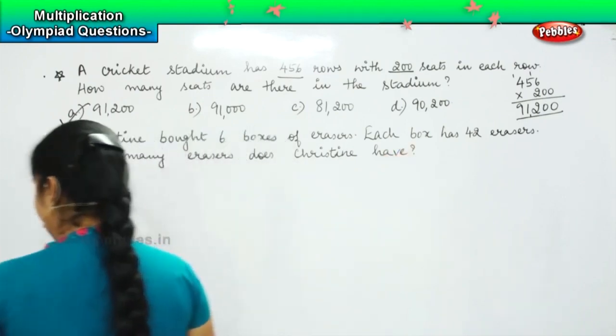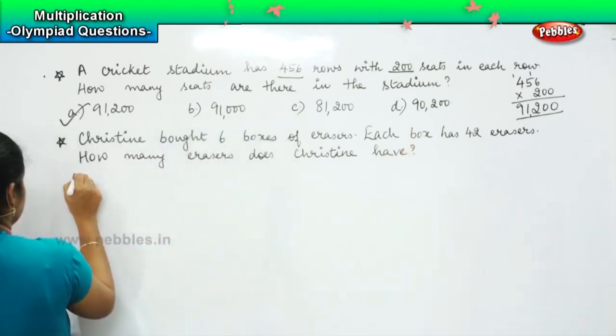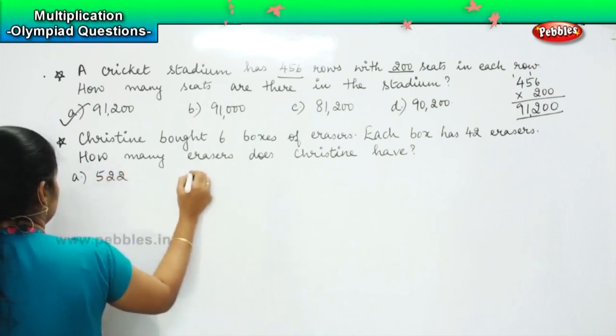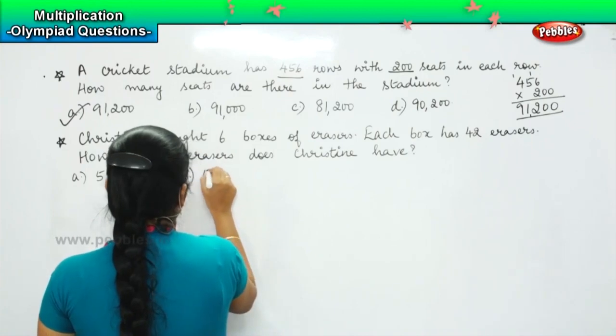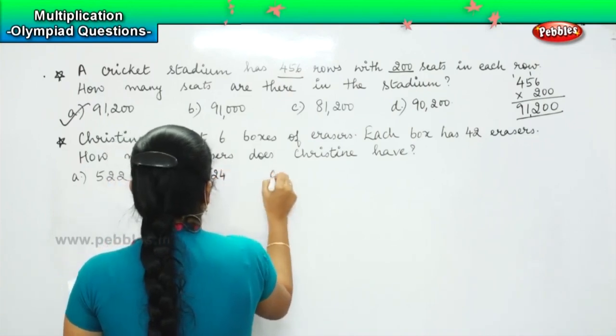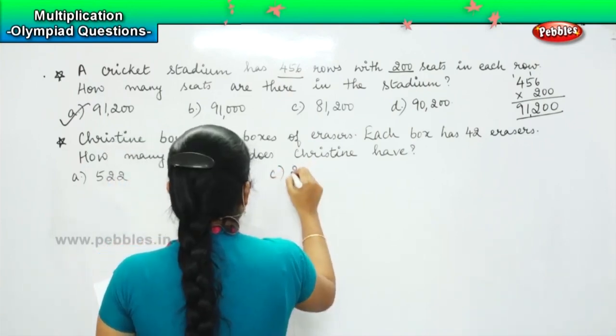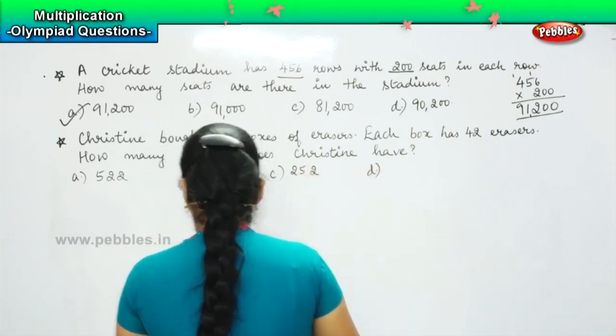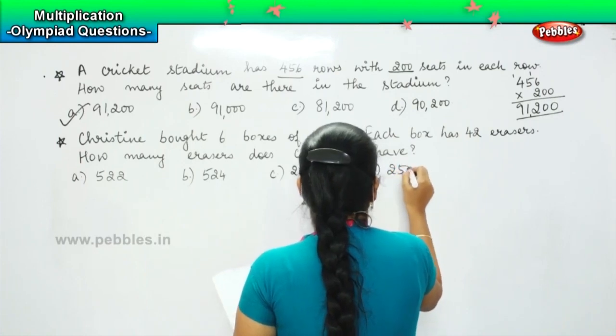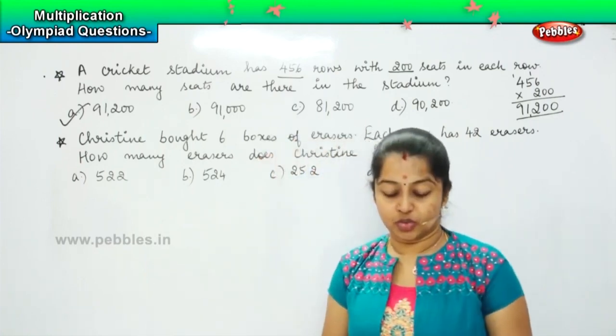And your options are: option A, 522. Option B, 524. Option C, 252. And option D, 250.